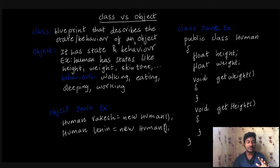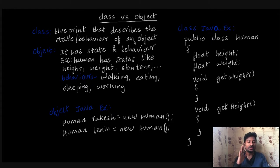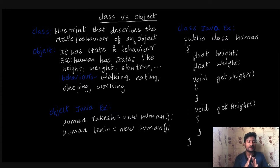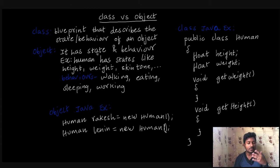How does the blueprint work? For example, there are many persons in this world. If we make a blueprint, we do not create just one. Here is an object — this is an object, it has a state or behavior. Here is a human class.